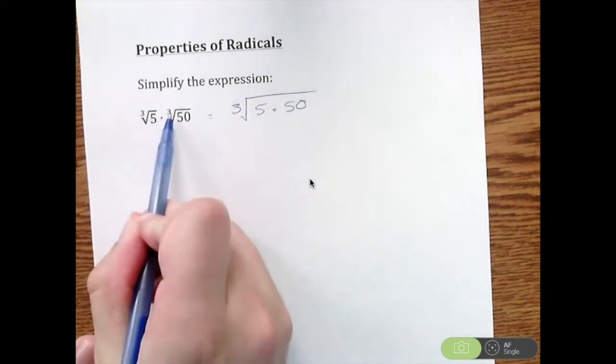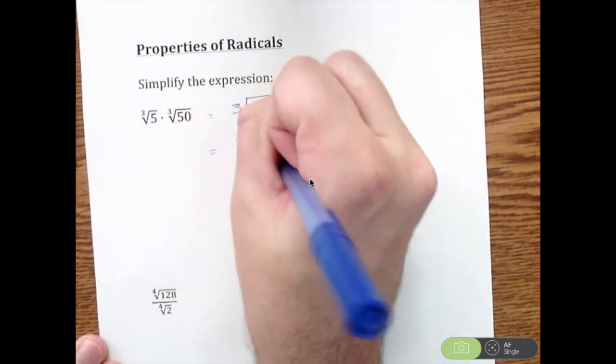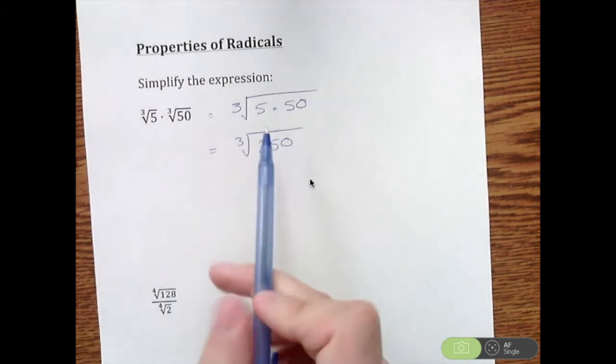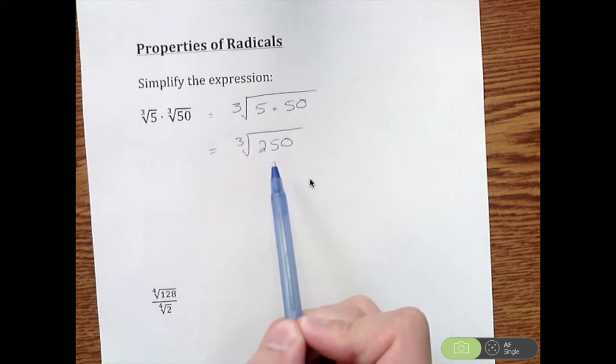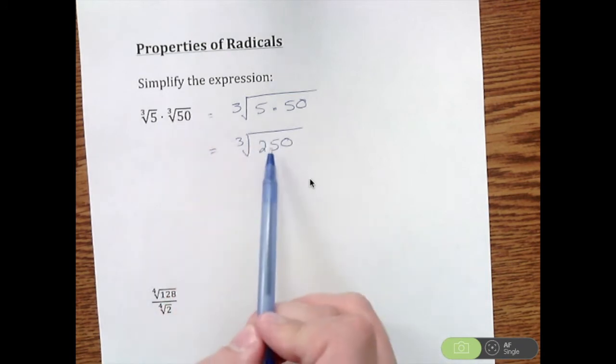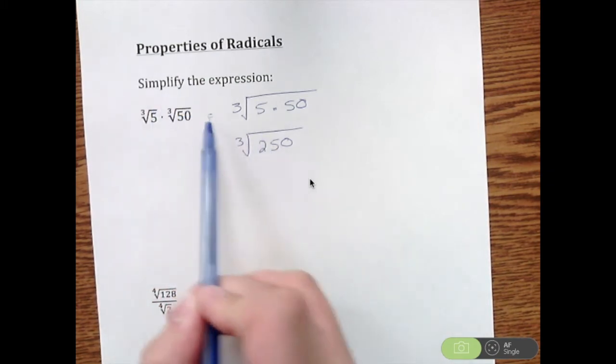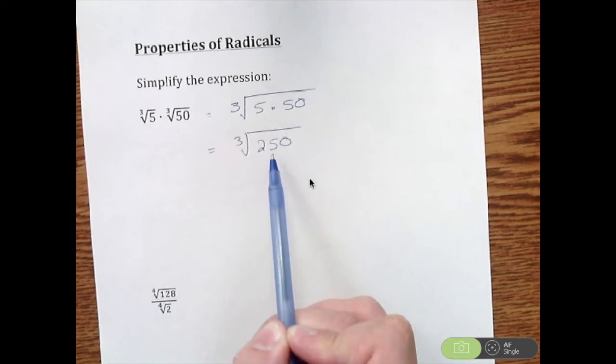Now here's the deal—on tests like the ACT, you'll see questions like this with multiple choice answers, and the cube root of 250 is typically one of the answers. But it is not completely simplified yet. Before we're done, we want to make sure this is as simplified as possible by applying simplifying radicals techniques.